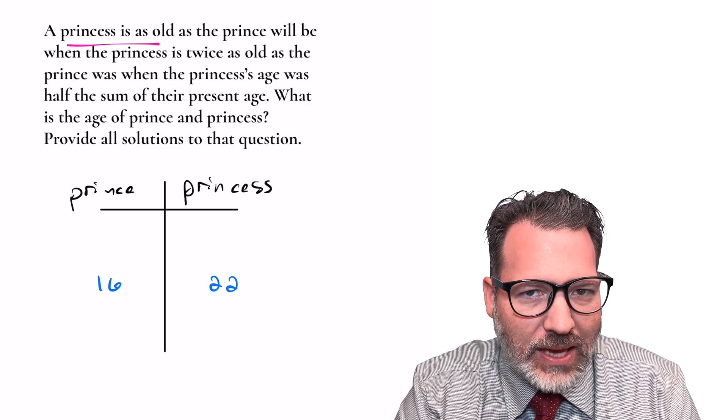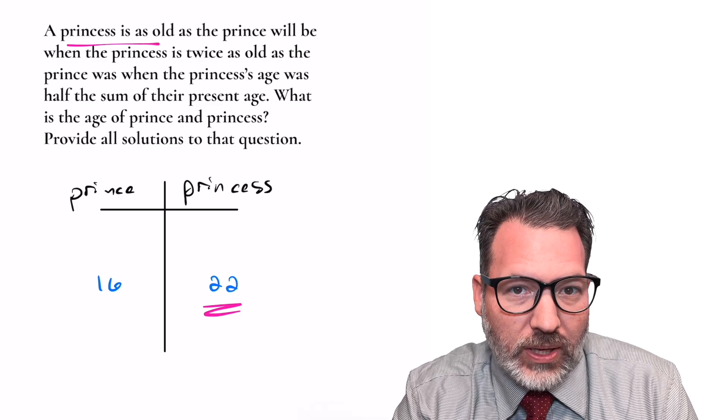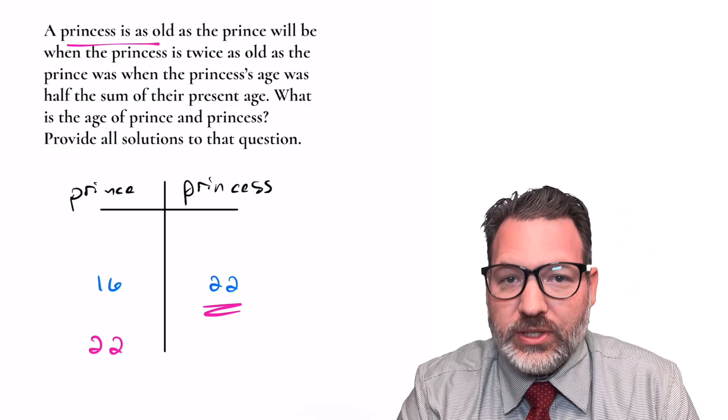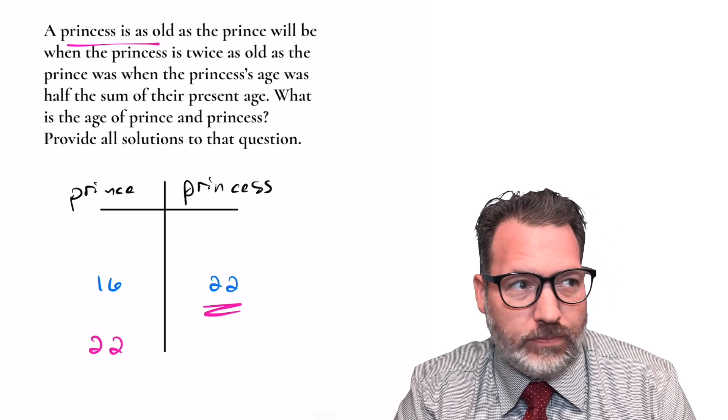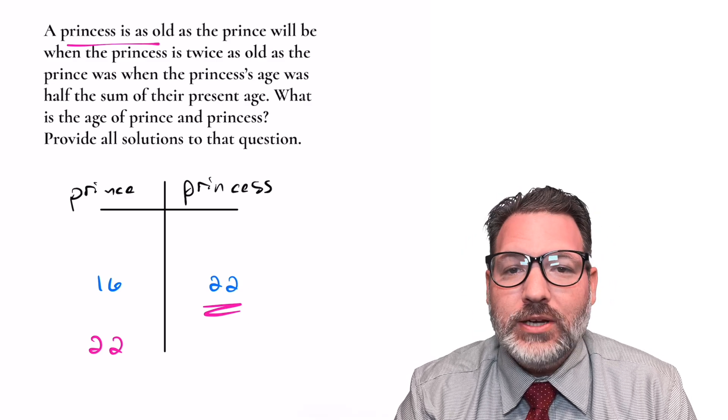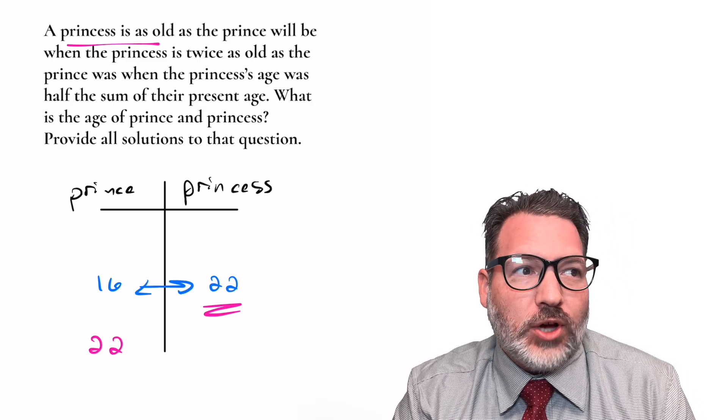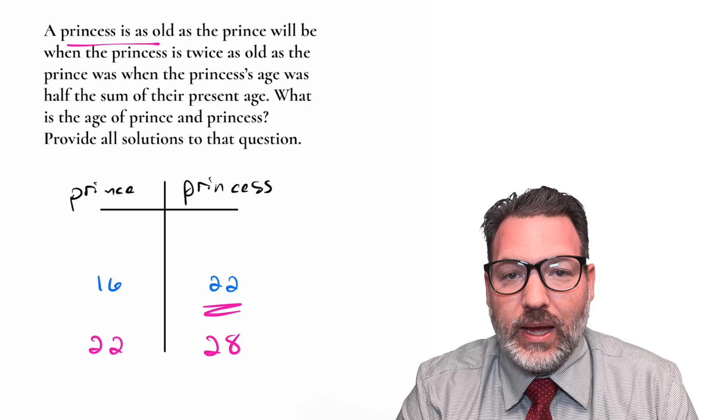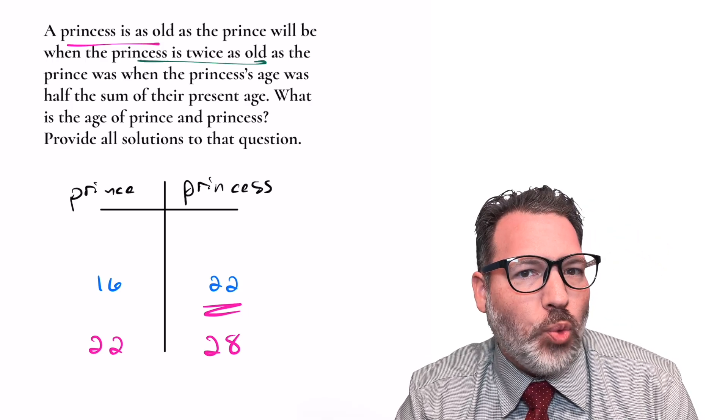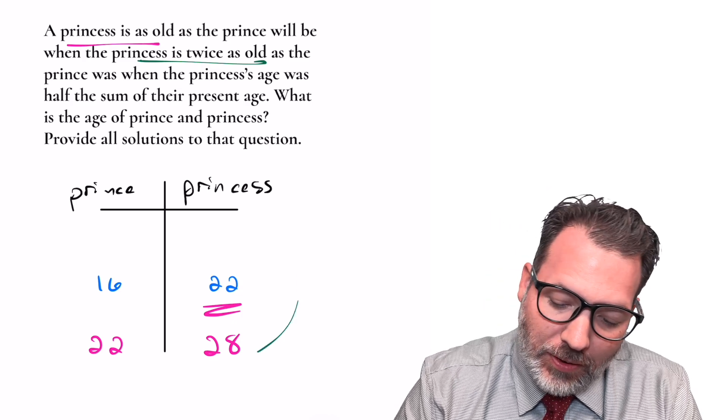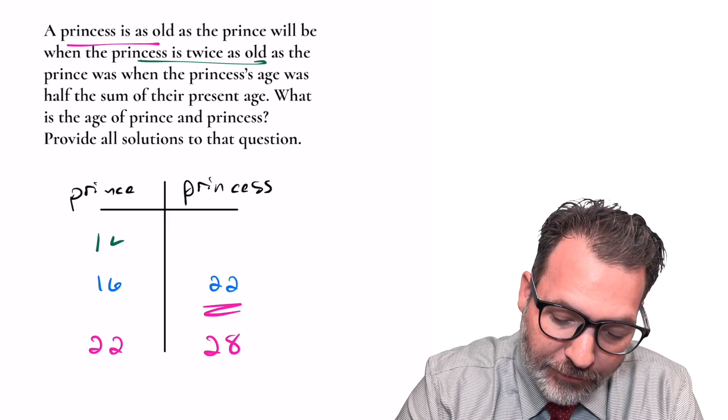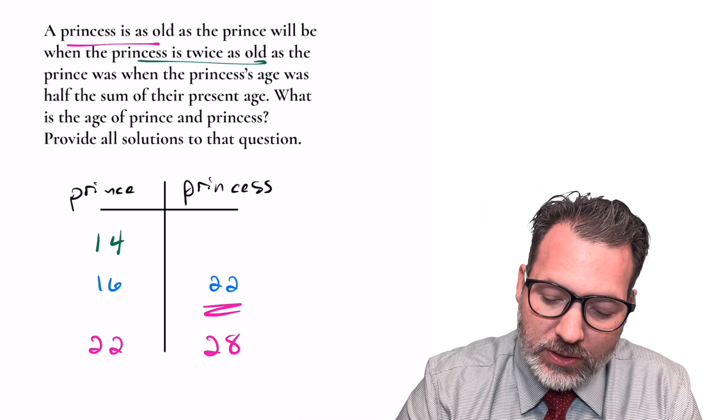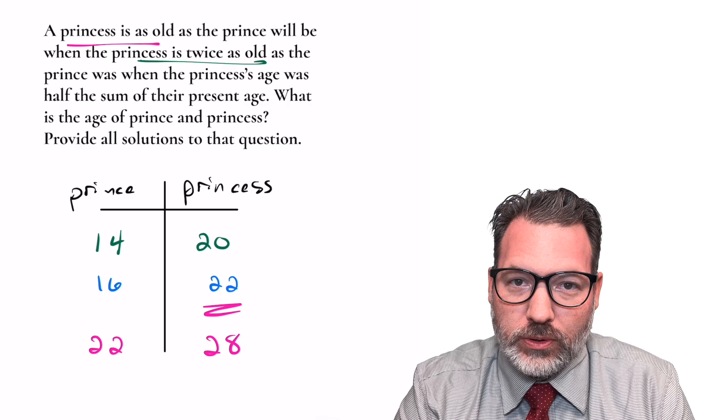Now, what it says is the princess is as old, so that is 22, as the prince will be. And so I'm going to pause there. This is some future age for the prince. At some point in time, the prince will be this same 22. And here's where I get my first insight into this problem. Obviously, like everyone in the world, the prince and princess age at the same rate. So if right now the prince and princess are six years apart, then when the prince is 22, they'll still be six years apart. The princess at that point must be 28. But when she's 28, she's supposed to be twice as old as the prince's age at some other point in time. So I'm going to come all the way back up here because 28 is twice as old as 14. So now we're backwards in time. We're back when the prince was 14 years old. Still though, the prince and princess are six years apart. So at that point in time, the princess must have been 20 years old.